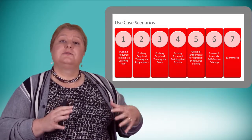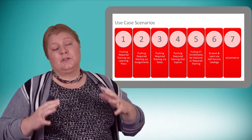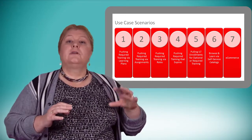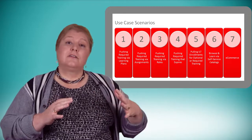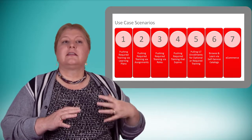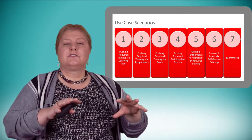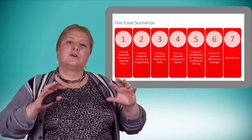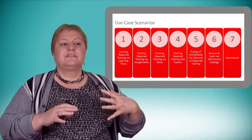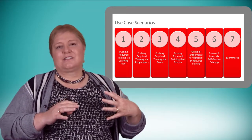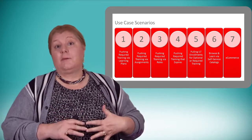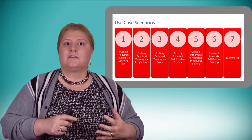We combine those different types of activities based on the different use case scenarios, and you'll see there are seven different use case scenarios. You don't have to choose just one — these can be mixed and matched together to make the right learn center for your structure. We have a lot of pushing activity in items 1, 2, 3, and 4, where we push learning plans out to users, push out assignments, push out roles, and handle training that expires — for example, on an annual basis. Then in items 5, 6, and 7, we tackle extra experiences like pulling ILT enrollments, browsing and working with other types of learning, and e-commerce if you're going to set the learn center up to sell content.